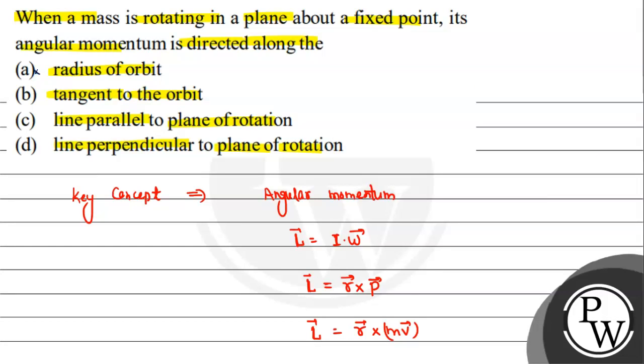The tangent is not the right answer. The third option, parallel to the plane of rotation, and the line perpendicular to the plane of rotation.